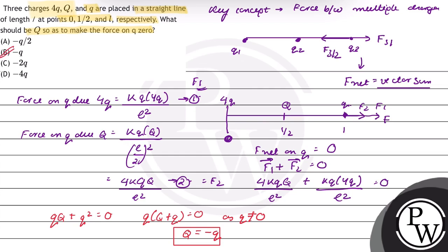So the correct option is option B. The value of capital Q should be equal to minus small q for which the force on small q will be 0.